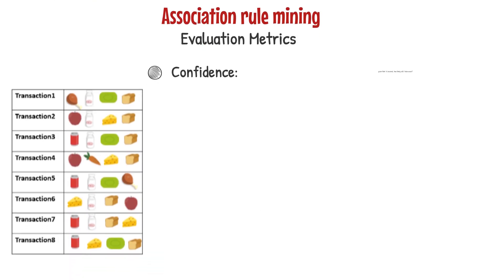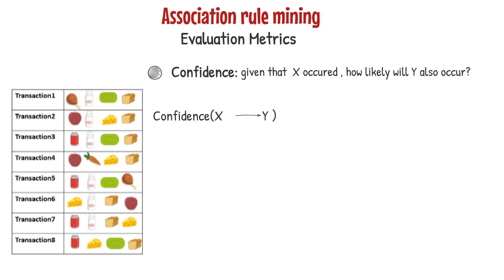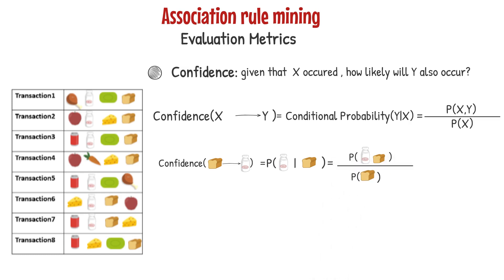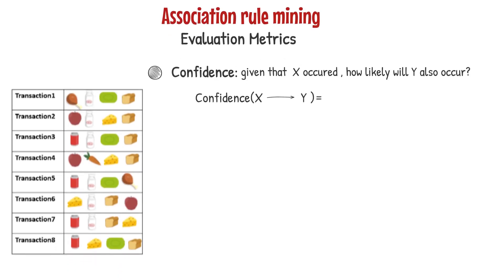Confidence tells us: given that event X already occurred, how likely will event Y also occur? Confidence can be interpreted as an estimate of the conditional probability — the probability of Y given X. So the confidence that milk will be bought given that bread is already bought equals the probability of milk given bread, which is the probability of both milk and bread divided by the probability of bread. Since the probability of an event is equivalent to its support, we can convert the equation to: the support of milk and bread divided by the support of bread. In general, the confidence that Y will occur given that X already occurred equals the support of both X and Y divided by the support of X.